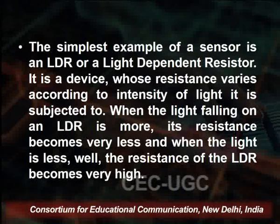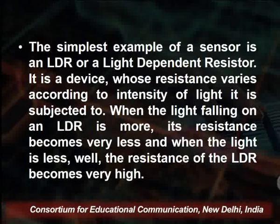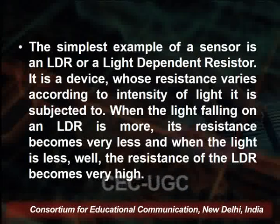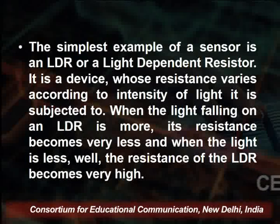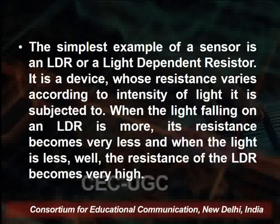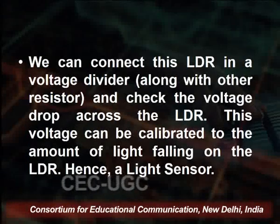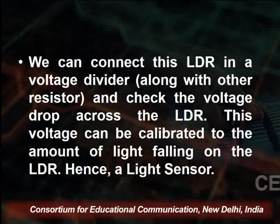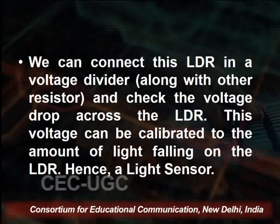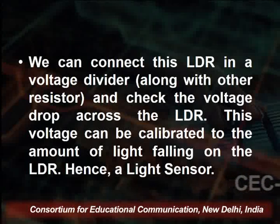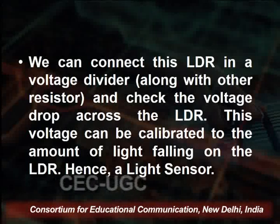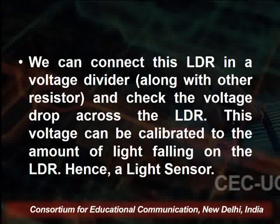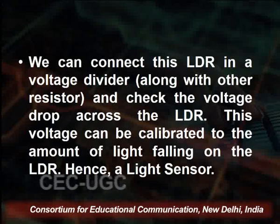A classic example of a sensor is the LDR — Light Dependent Resistor — mostly used in laboratories. It is a type of device where resistance varies according to the intensity of incident light falling upon a material. When more light falls on the LDR, resistance decreases; when light is less, resistance becomes very high. We can connect the LDR in a voltage divider with another resistor and check the voltage drop across the LDR. This voltage can be calibrated to the amount of light falling on the LDR — hence it is known as a light sensor.